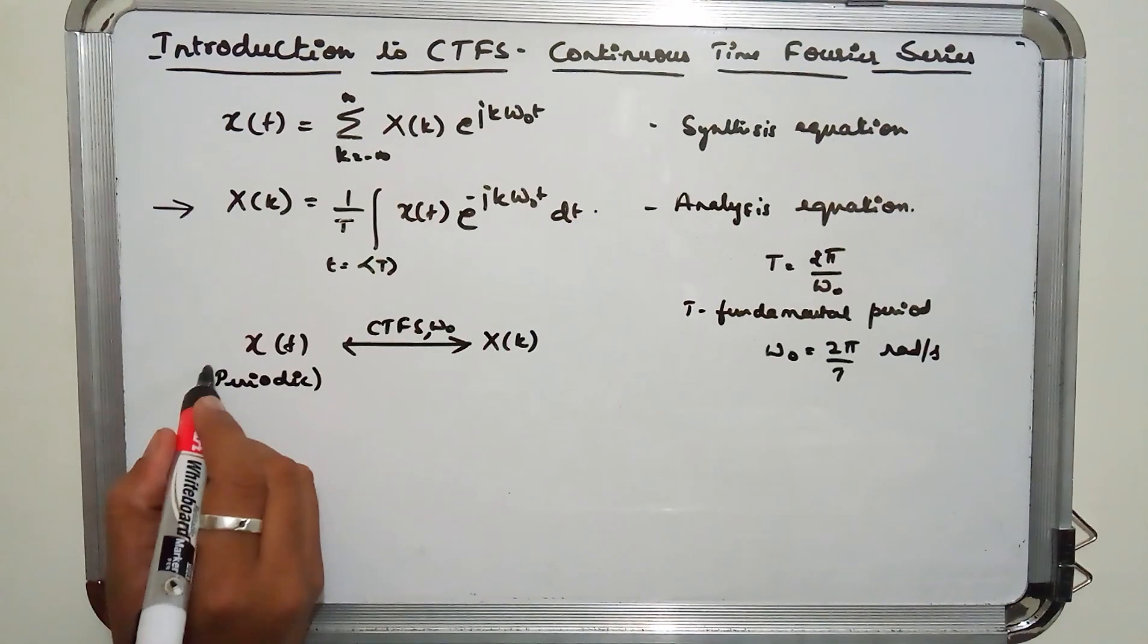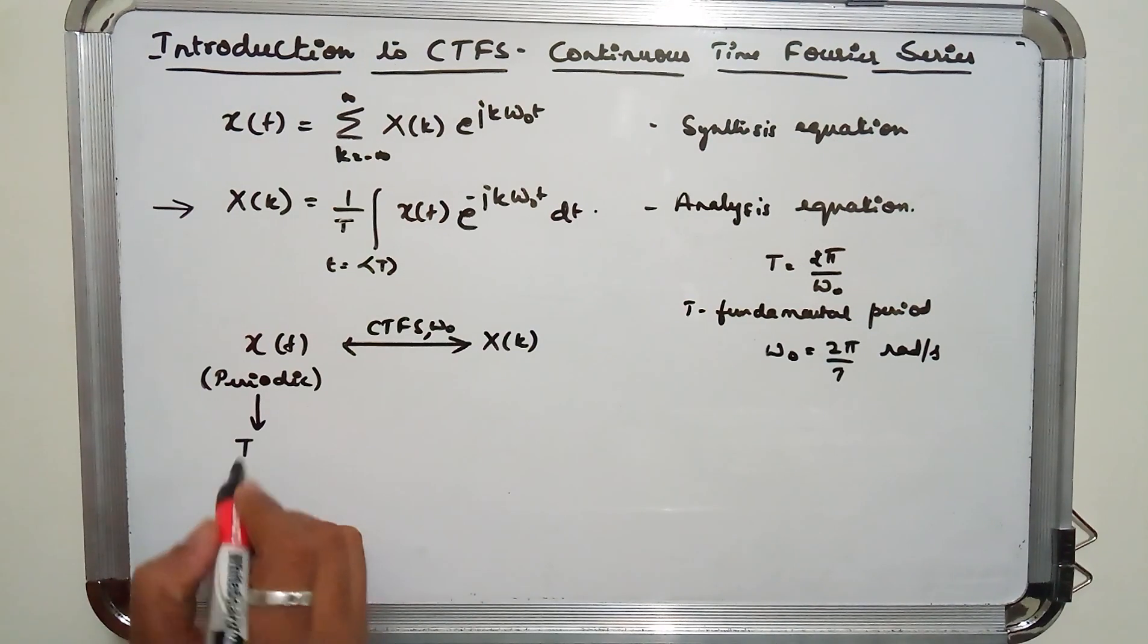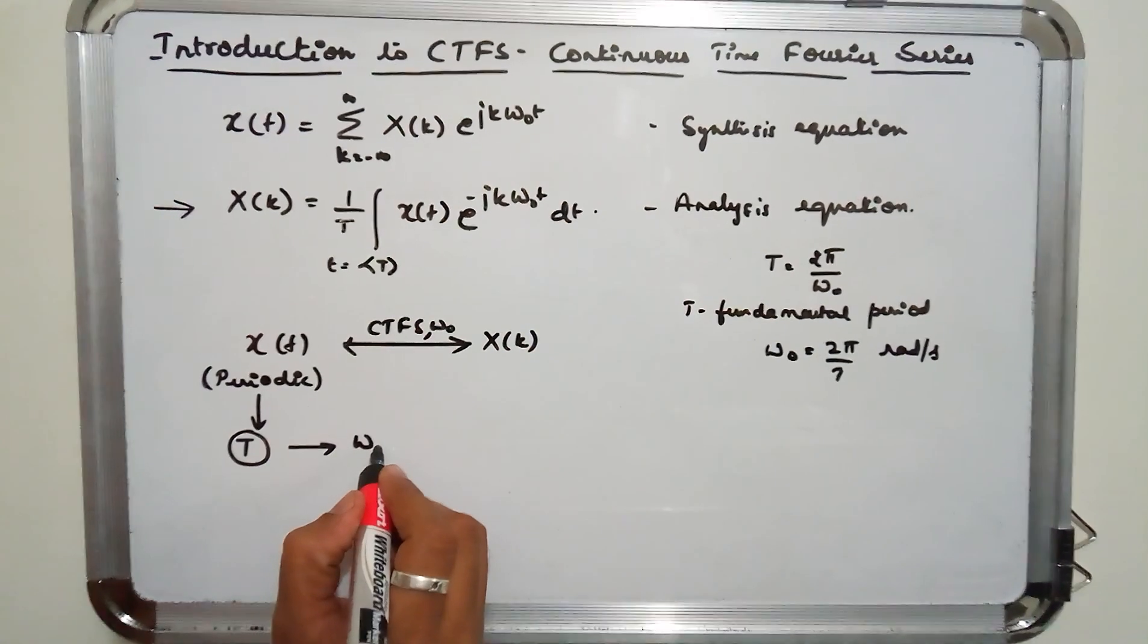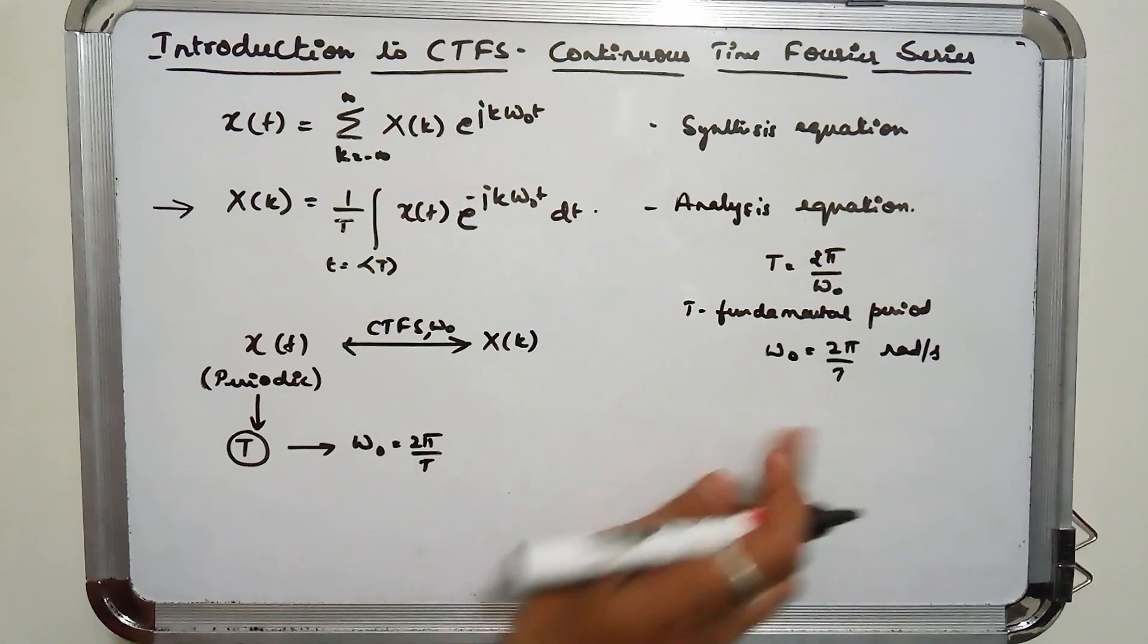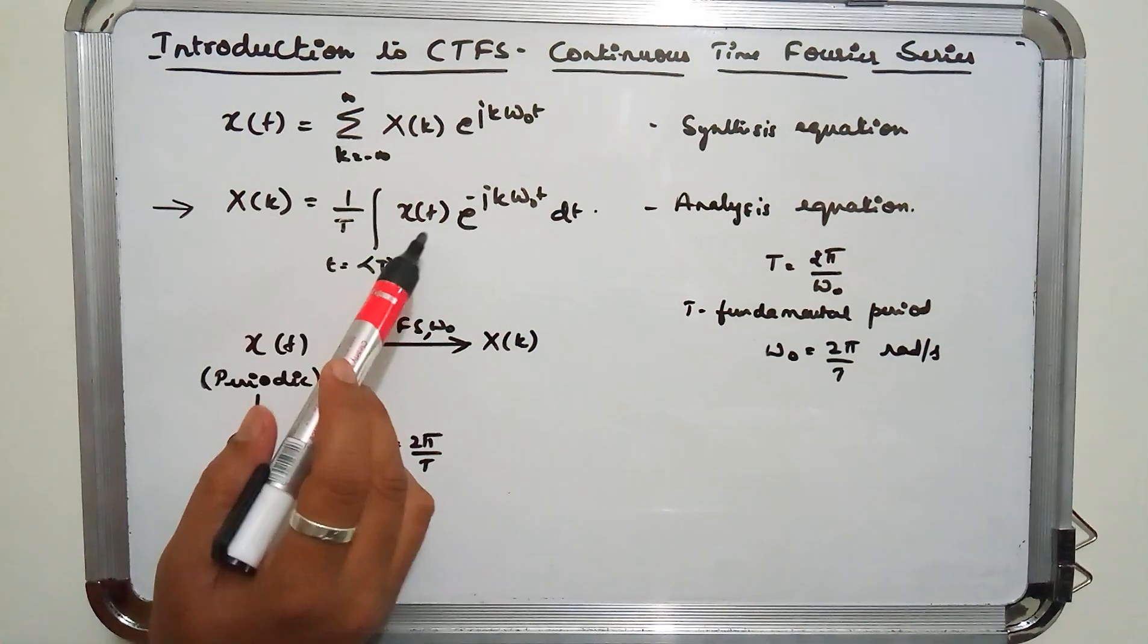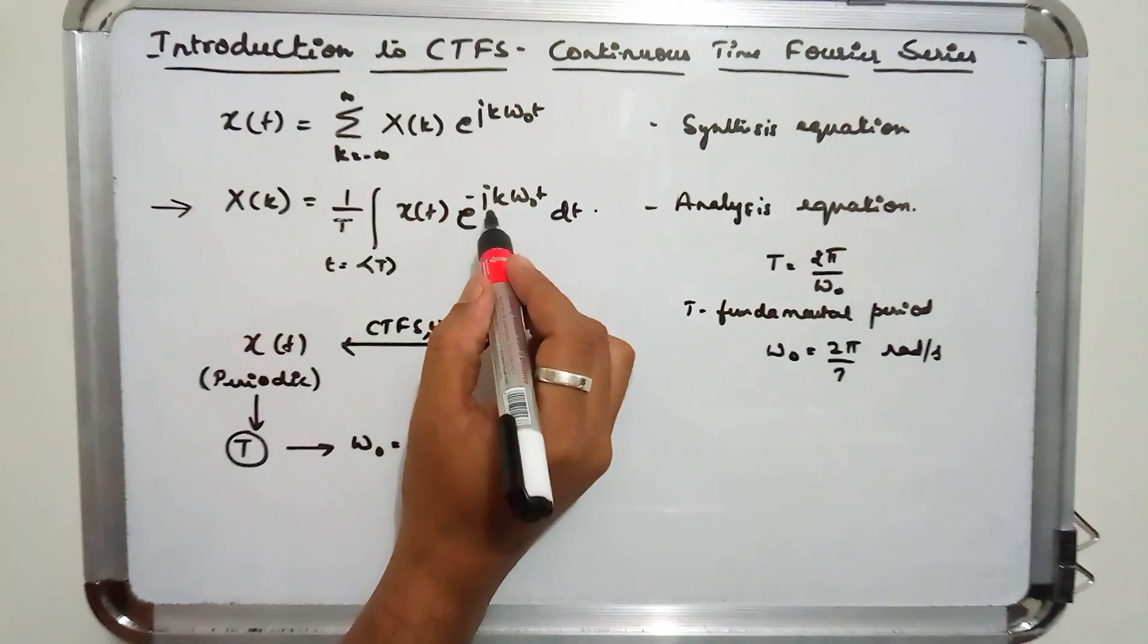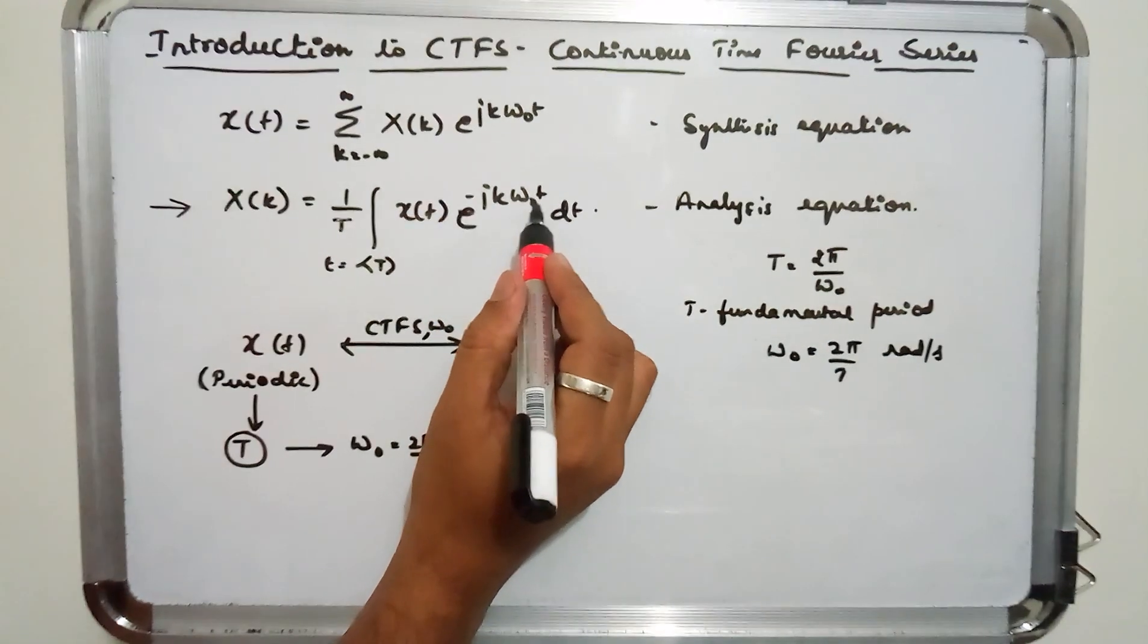So if input signal is periodic, then it will have its fundamental period which is given by T. Knowing the fundamental period, we can calculate the fundamental frequency, angular frequency, that is omega 0 equals 2 pi by T radians. So if X(t) is given, if you integrate over an entire period and multiply with a complex exponential, it is e power minus j k omega 0 t dt.